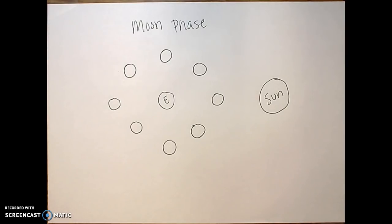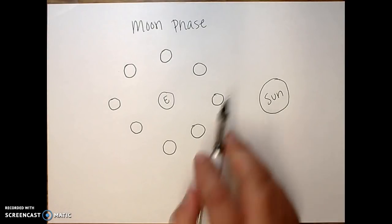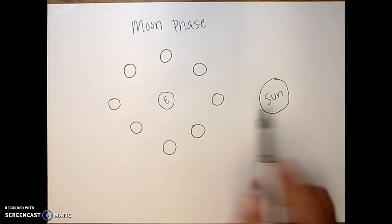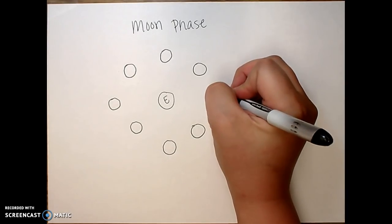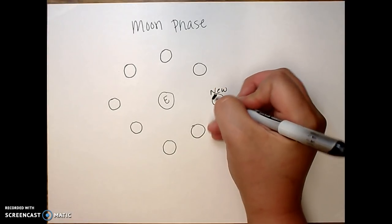So the first phase that I like to draw is my new moon. And my new moon is always going to be the moon that is closest to the sun. So I'm going to go ahead and mark that with new and I'm going to shade it all the way in.